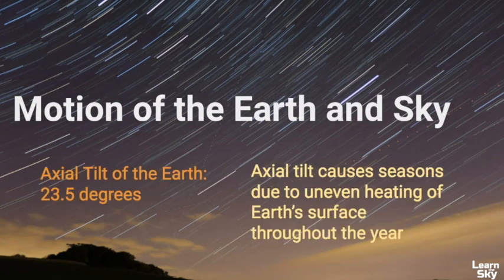Finally, we know the axial tilt of the earth is 23 and a half degrees and this axial tilt is what causes the seasons on earth. There's uneven heating on the surface throughout the year causing temperature differences.